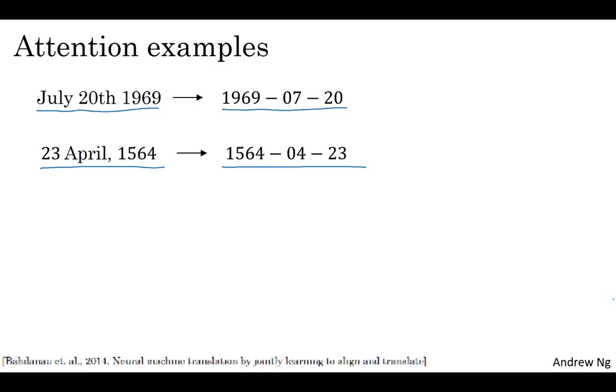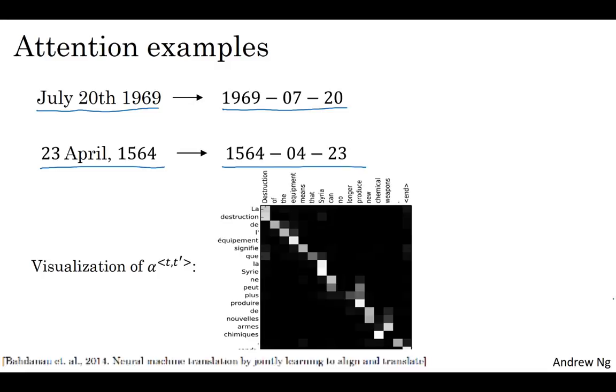One other thing that's sometimes fun to do is to look at the visualizations of the attention weights. Here's a machine translation example. And here we're plotted in different colors the magnitude of the different attention weights. You find that the corresponding input and output words, you find that the attention weights will tend to be high, thus suggesting that when it's generating a specific word in output is usually paying attention to the correct word in the input. And all this, including learning where to pay attention when, was all learned using backpropagation with an attention model.